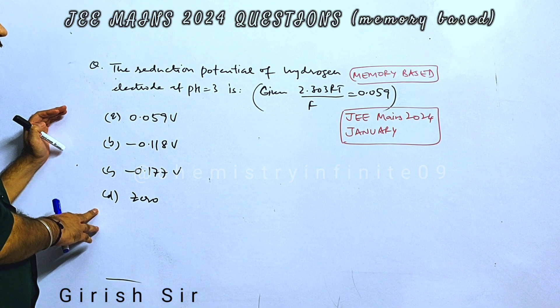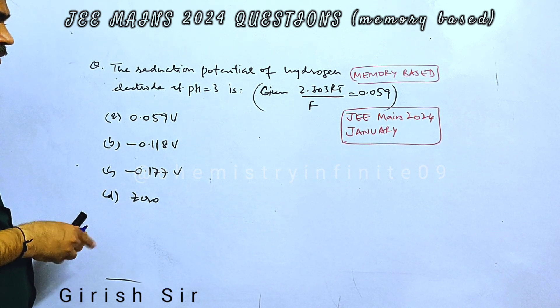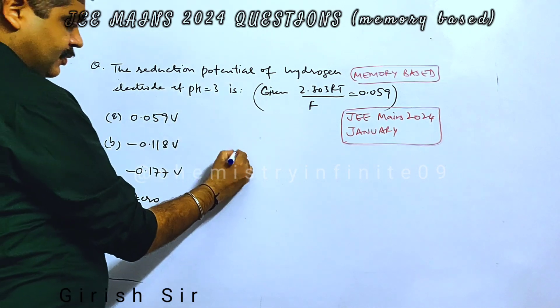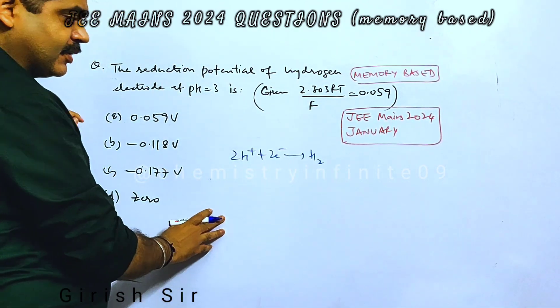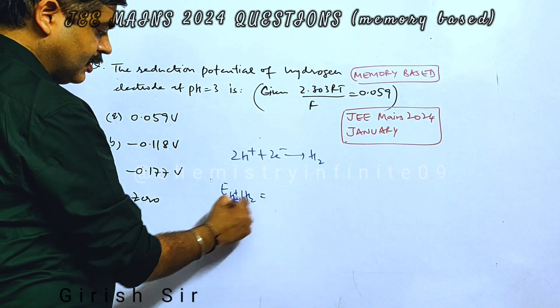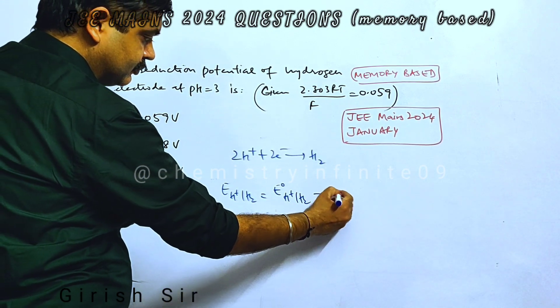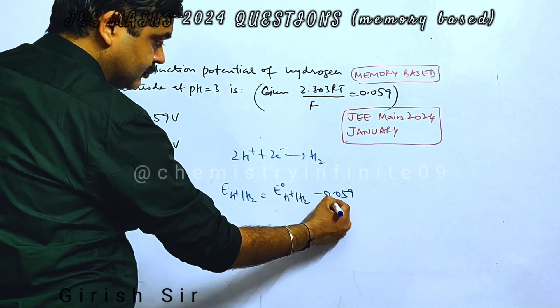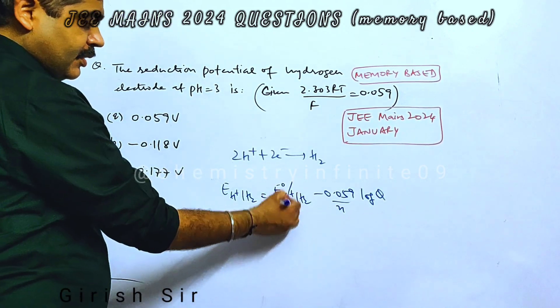Let's solve this question from electrochemistry. We have to find the reduction potential of hydrogen electrode at the specified pH value. This is the reduction reaction taking place in the hydrogen electrode. Using Nernst equation, reduction potential equals standard reduction potential of hydrogen.